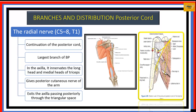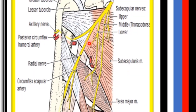The radial nerve is the distal continuation of the posterior cord and the largest branch of the brachial plexus. It also lies deepest in the axilla. In the axilla it gives branches innervating the long head and middle head of triceps brachii, and also gives off the posterior cutaneous nerve of the arm. After these three branches, it exits through a triangular intermuscular space to the posterior compartment of the arm.